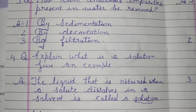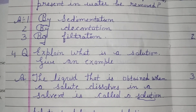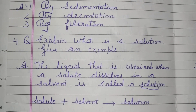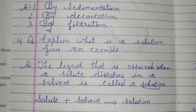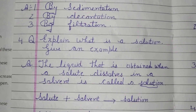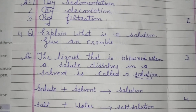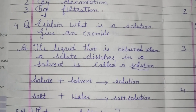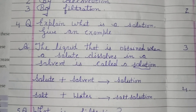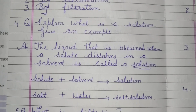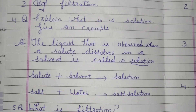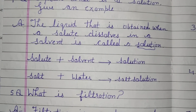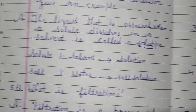Fourth question: What is a solution? Give an example. Answer: The liquid that is obtained when a solute dissolves in a solvent is called a solution. Solute plus solvent equals solution. Salt plus water equals salt solution.